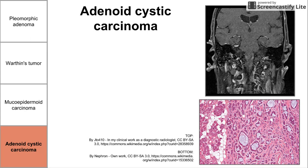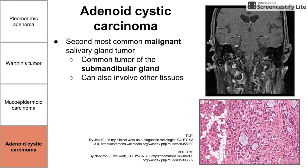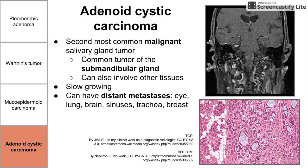Next is another malignant tumor: adenoid cystic carcinoma. This is the second most malignant salivary gland tumor. It's common in the submandibular gland, so if there's a tumor in the submandibular gland, it's most likely adenoid cystic carcinoma. It can also involve other tissues. It's slow-growing and tends to have distant metastases — as far as the breast, trachea, sinuses, brain, and lungs. Treatment is also surgical resection, usually followed by radiation.